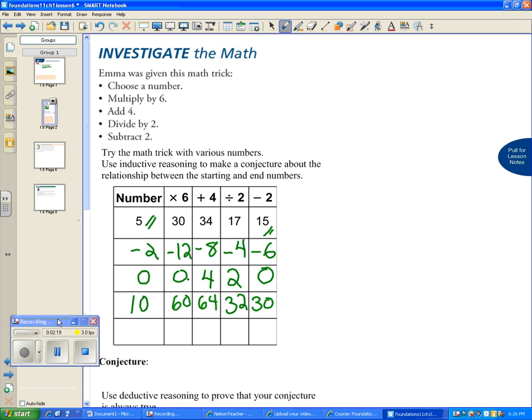So what's the relationship between 5 and 15, negative 2 and negative 6, 0 and 0, 10 and 30? Using inductive reasoning and looking at that pattern, it seems like the last number is 3 times the first number, or 3n. 5 times 3 is 15, negative 2 times 3 is negative 6, 0 times 3 is 0, and 10 times 3 is 30. So our conjecture is the ending number is 3 times the starting number.